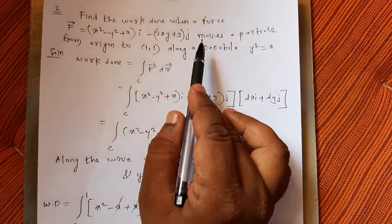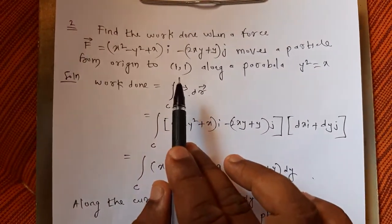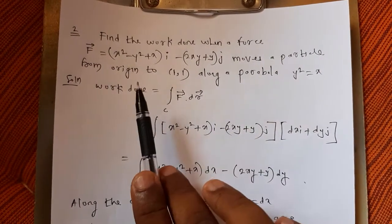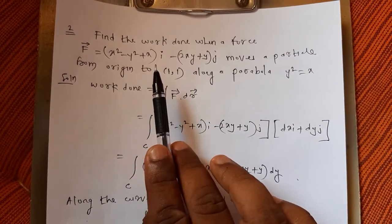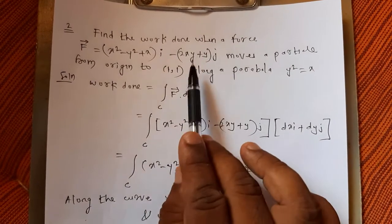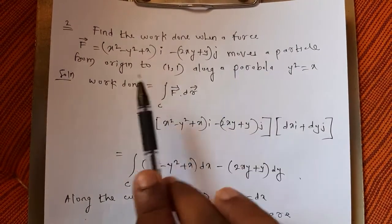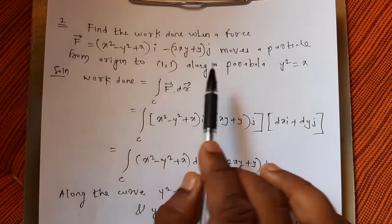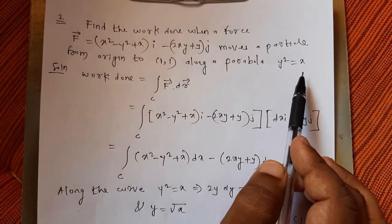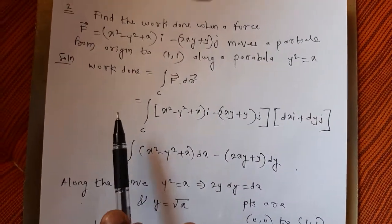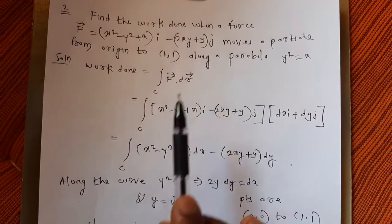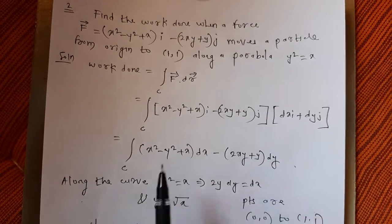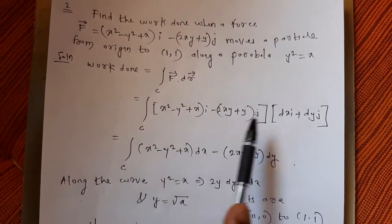One more example, similar to the last: find the work done when a force F = (x² - y² + x)·i - (2xy + y)·j moves a particle from the origin (0,0) to (1,1) along the parabola y² = x.